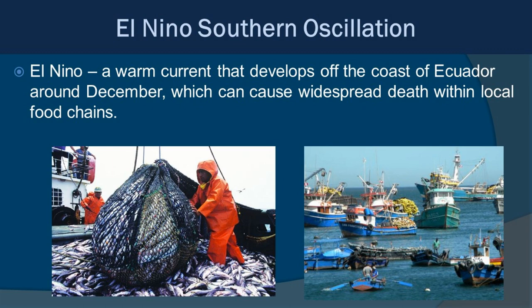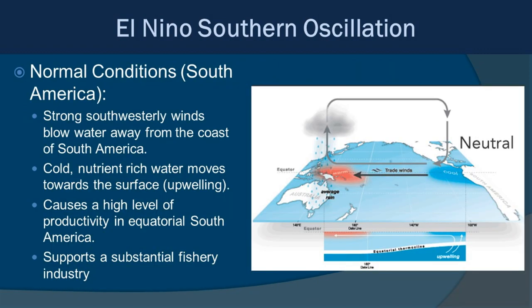This concept of upwelling is really important when we're talking about El Niño, or the Southern Oscillation. El Niño refers to the situation where a warm current develops off the coast of Ecuador, usually around December, which can cause widespread death in the local food chains. The western coast of South America — Ecuador, Peru — relies heavily on healthy fisheries for economic development, so when El Niño events occur, it can have a very negative and damaging impact.